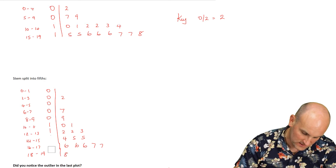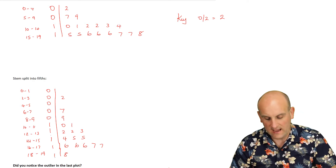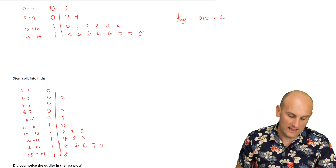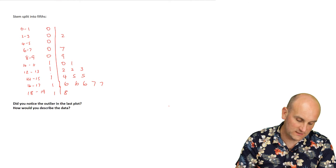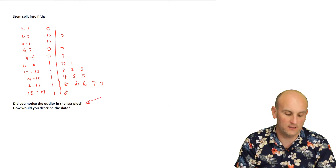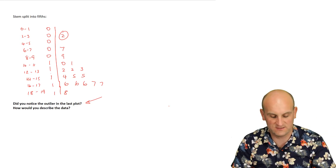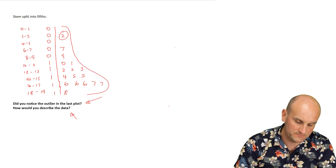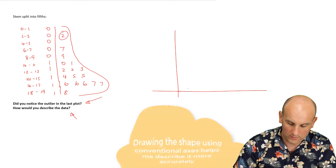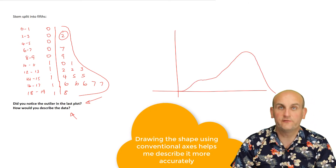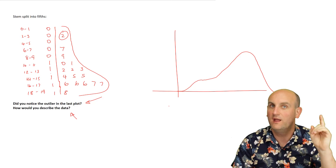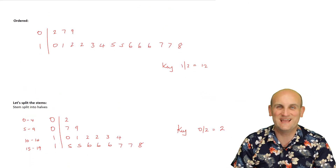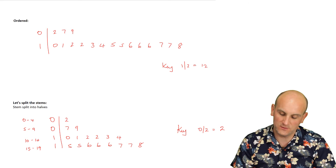Now we see the most beautiful shape. By splitting it into fifths, we've actually got a clear distribution shape. We can notice that the value of 2 seems separated away from the rest of the data — a possible outlier. And if we look at the shape, because the data is more concentrated to the positive end, it's negatively skewed. We would never have been able to tell that from the original data, so being able to split stems is really, really important.